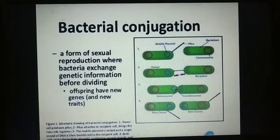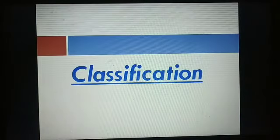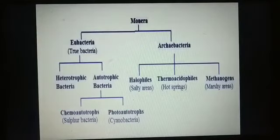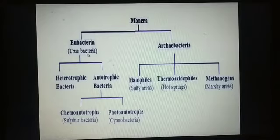Sexual reproduction occurs by the parasexual process, also called genetic recombination. Now we read about the classification of the Monera kingdom. Monera kingdom is divided into two categories: Eubacteria, also called true bacteria, and Archaebacteria, which are primitive — very primitive, ancient bacteria. The word 'Archae' means ancient.